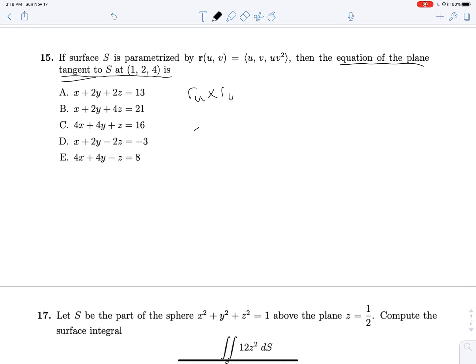And so in this case, RU is going to be 1 comma 0 comma V squared, and RV equals 0 comma 1 comma 2UV. And yet again, we can simplify these even further. This will be 1 comma 0 comma, V is equal to 2, so 4, 1 comma 0 comma 4, and RV is going to be 0 comma 1 comma 4.